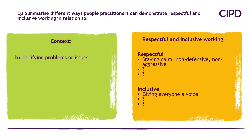The same applies to the context of clarifying problems and issues — think about what respectful and inclusive working would be there. Is respectful working about staying calm, being non-defensive, non-aggressive? What else would respectful working mean? What about being inclusive in this context — maybe it's about giving everyone a voice, but what else? Think about those two types of working — respectful and inclusive — positioned within the context of clarifying problems and issues, and come up with your own summary.